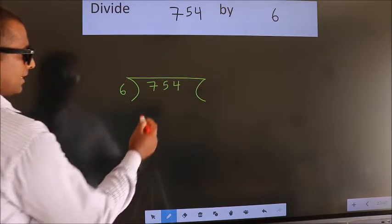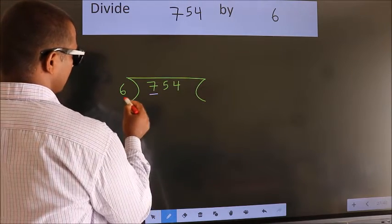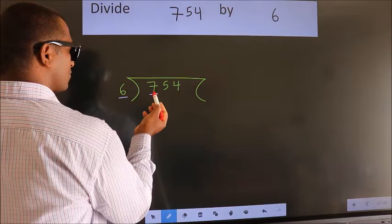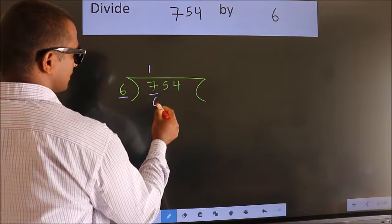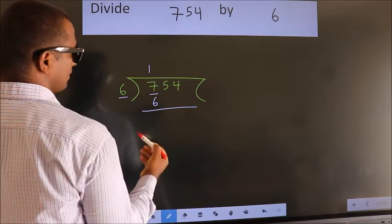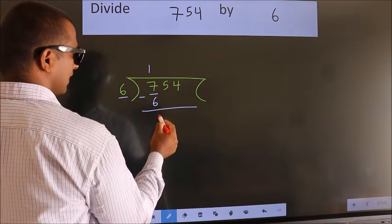Next. Here we have 7. Here 6. A number close to 7 in 6 table is 6 1s 6. Now we should subtract. We get 1.